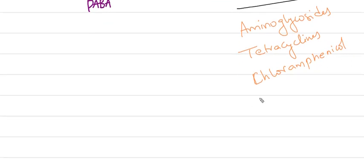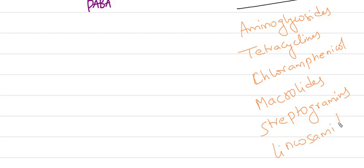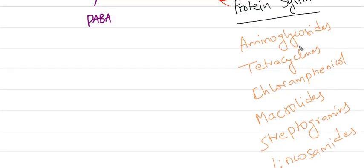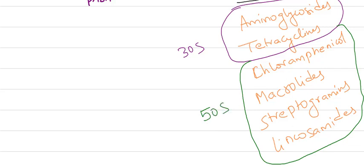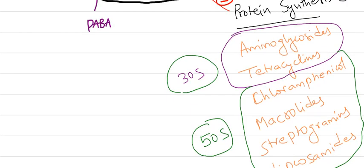And Chloramphenicol, Macrolides like Erythromycin, Azithromycin, and Streptogramins like Dalfopristin, and Lincosamides like Clindamycin and Lincomycin - all these will block 50S ribosomes. As I earlier said, Aminoglycosides and Tetracyclines block 30S ribosome, whereas Chloramphenicol, Macrolides, and Streptogramins block 50S ribosome. This is about protein synthesis inhibitors.